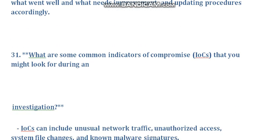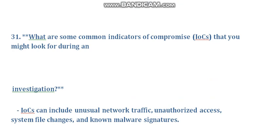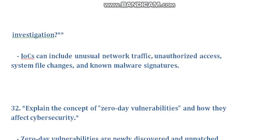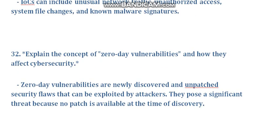What are some common indicators of compromise (IOCs) that you might look for during an investigation? IOCs include unusual network traffic, unauthorized access, system file changes, and known malware signatures.